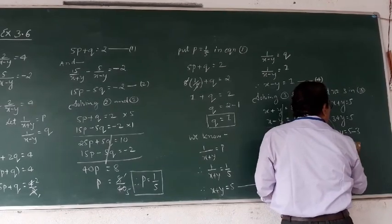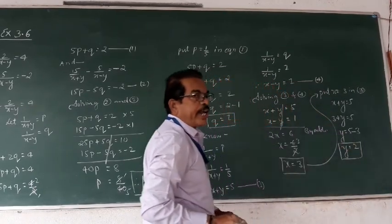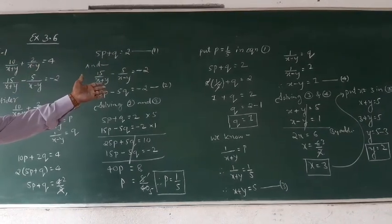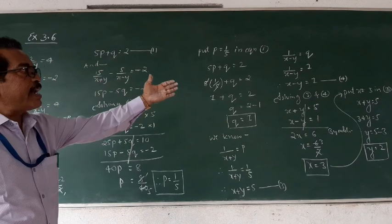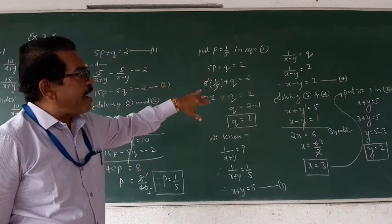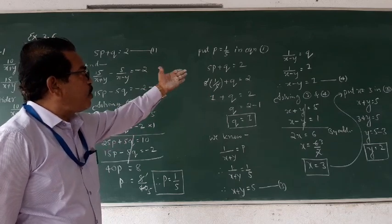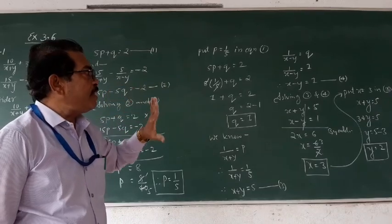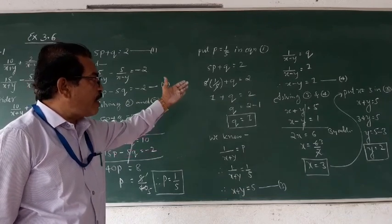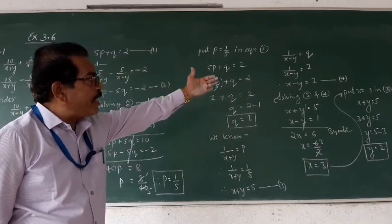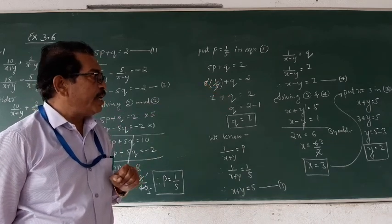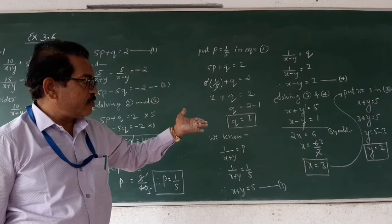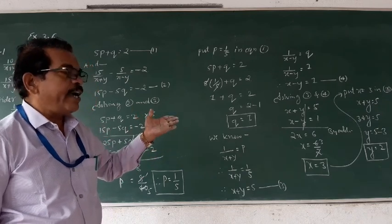Therefore y equals to 2. In both cases we solved a pair of linear equations — first with p and q as variables, then with x and y as the variables. We got the values of p and q and then x and y respectively. Such types of problems carry 3 marks, so solve carefully to get the exact answers.